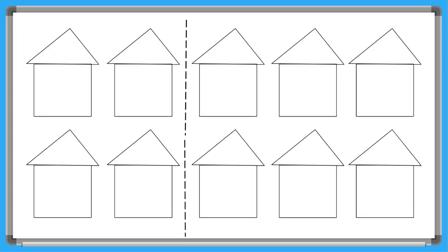Now John buys more houses, so now he has ten houses. If he paints two-fifths of the houses green, how many of the houses will be green?